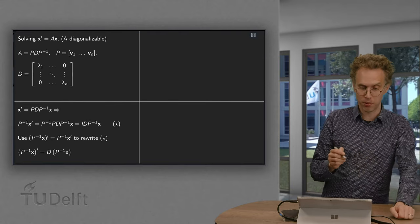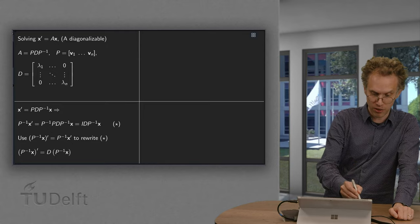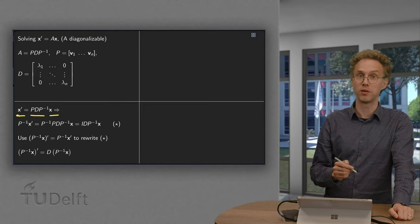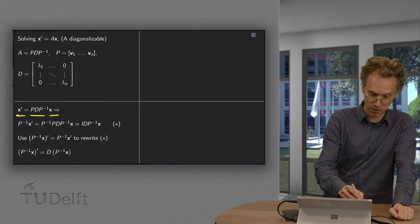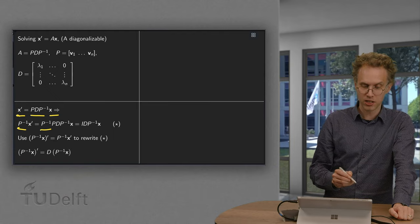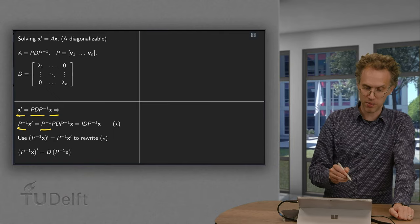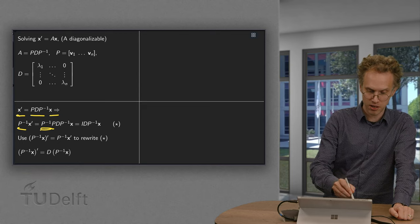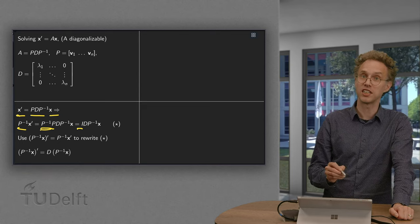So how did we solve this problem? x prime equals a times x. First multiply with p inverse on the left. So we get p inverse times x prime equals p inverse times p times d times p inverse times x. So p inverse times p equals the identity matrix.